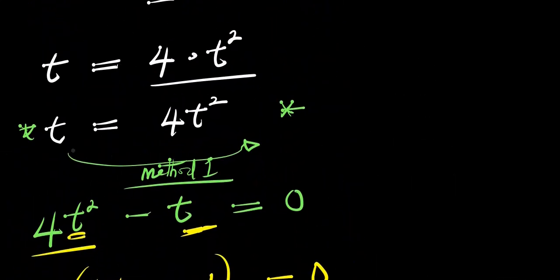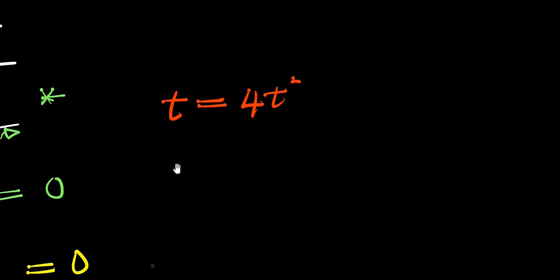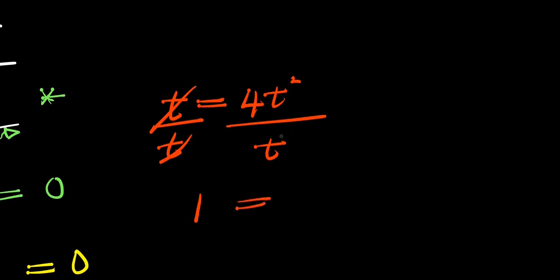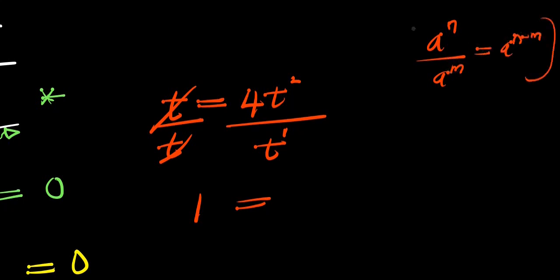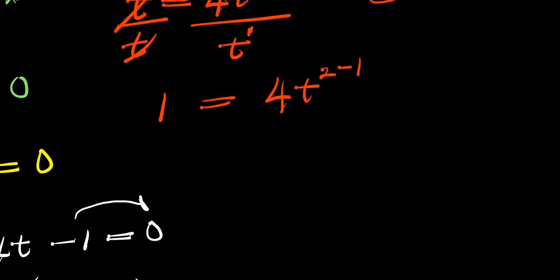Let's go back to t equals 4t squared. This is the second method: I divide each part of this equation by t. So t divided by t gives 1, equals 4t squared divided by t to the power of 1. Applying the identity a to the power of n divided by a to the power of m equals a to the power of n minus m, I get 1 equals 4t to the power of 2 minus 1, which is 4t.